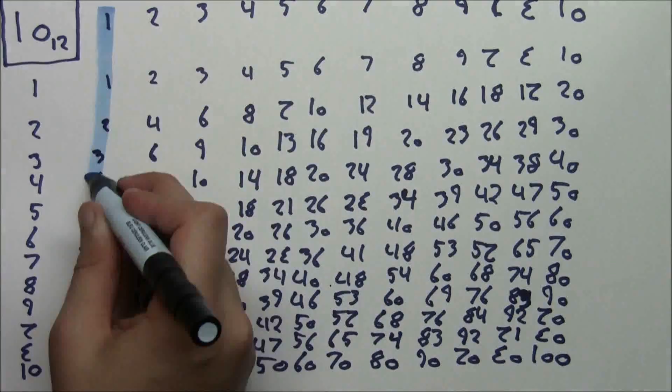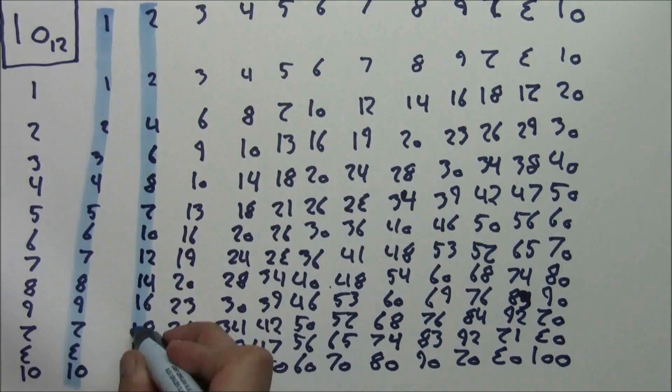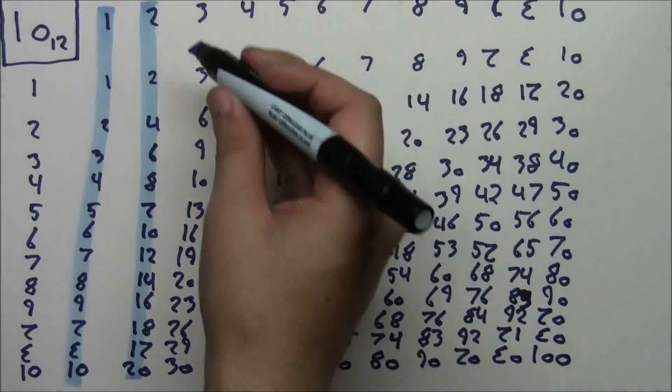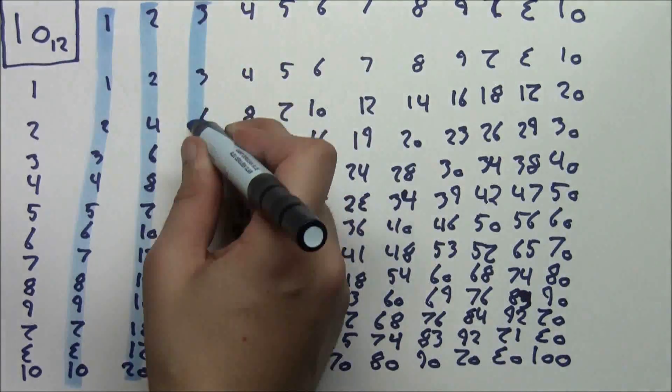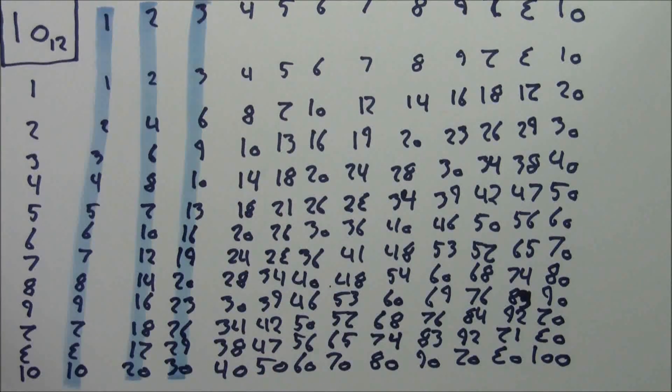1 is pretty obvious. In 2, we have 2, 4, 6, 8, deck, doe repeating. Then 3, we get a nice 3, 6, 9, 0, 3, 6, 9, 0 pattern.